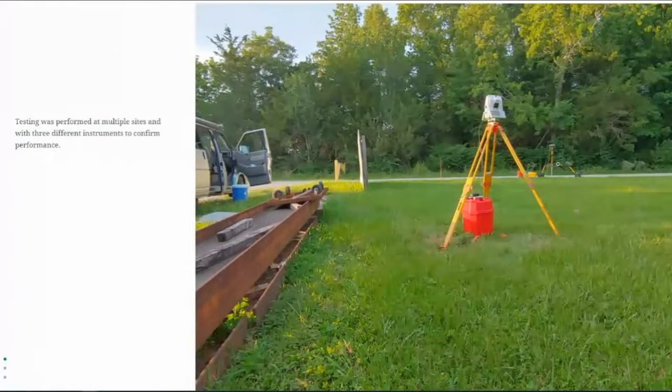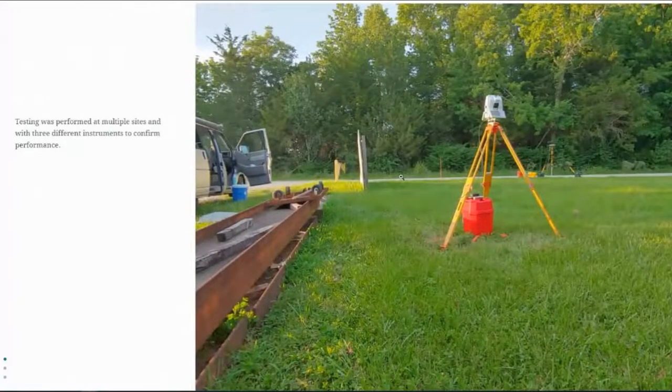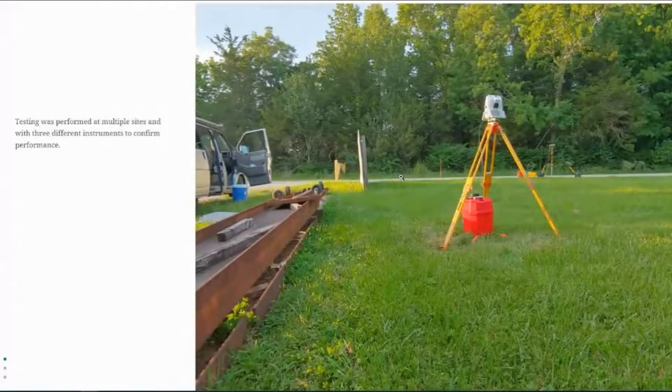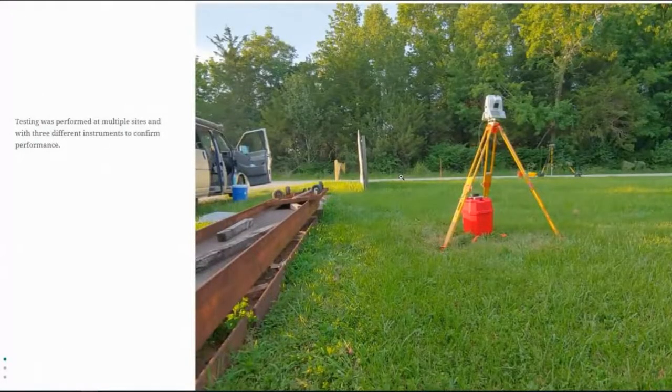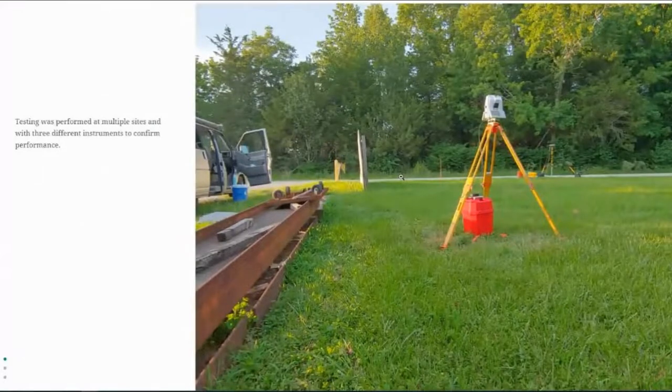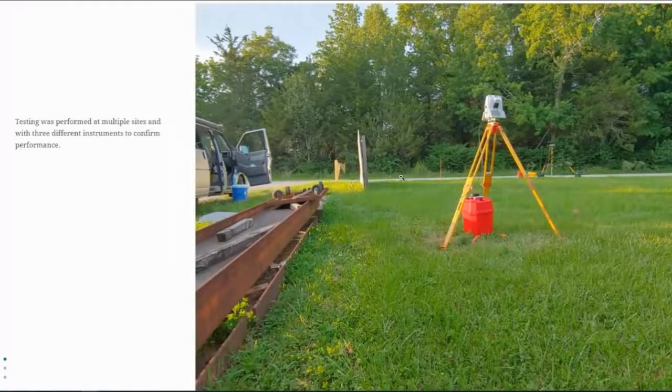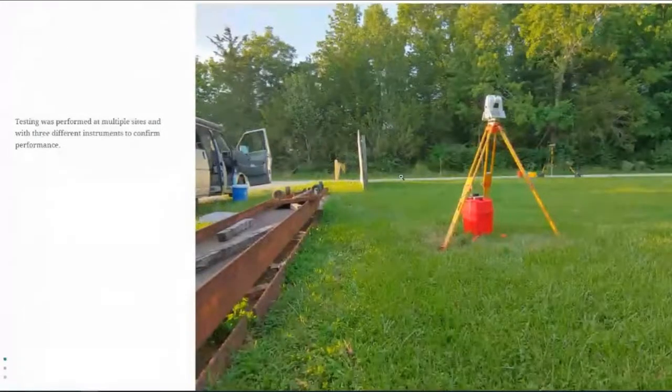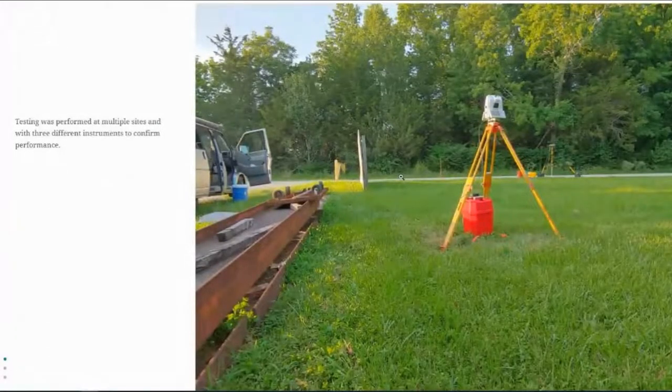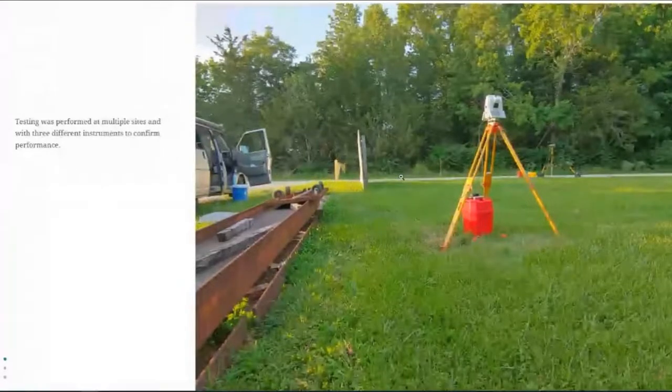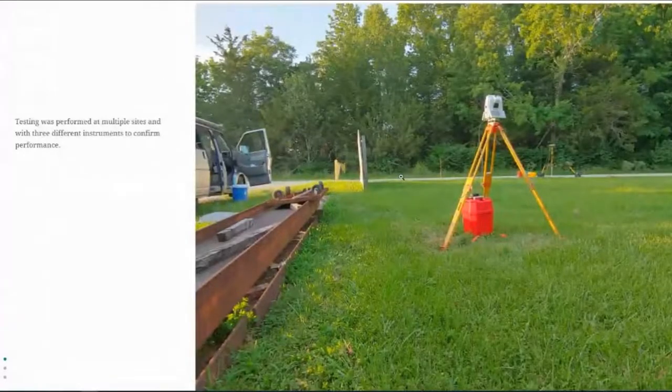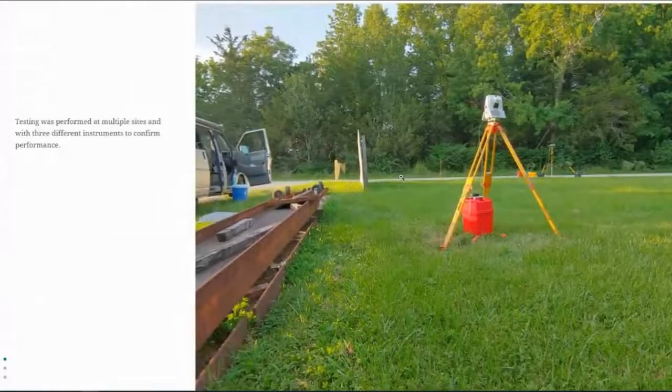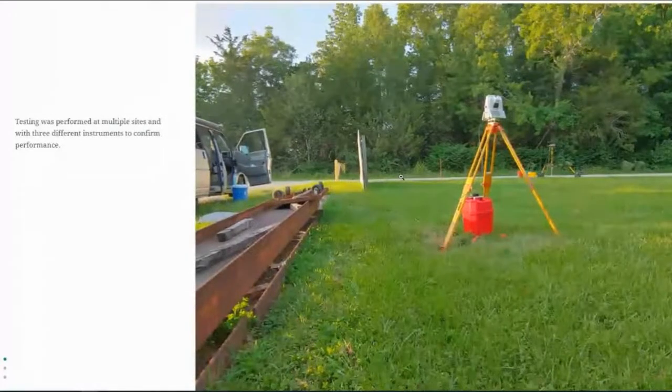Because we're utilizing existing robotic total station, we can actually just shoot vector ties really quickly and set up on an eccentric point. The reason this is so valuable from the DOV standpoint is we're not having to bring a special piece of equipment out on a full tie survey. We can actually just utilize the robotic total station that we would have there.